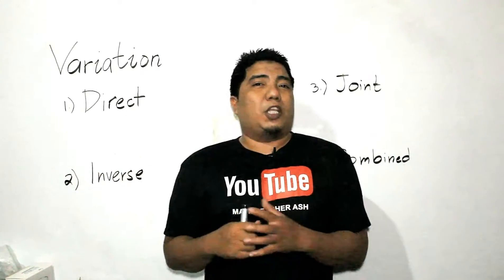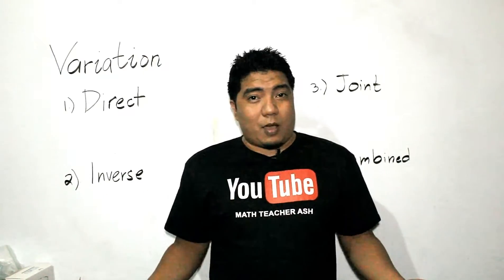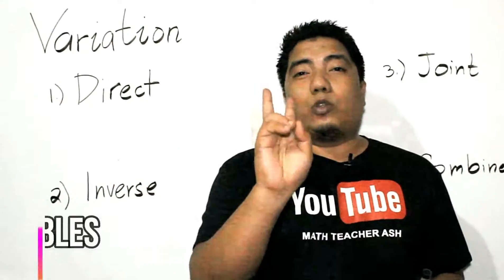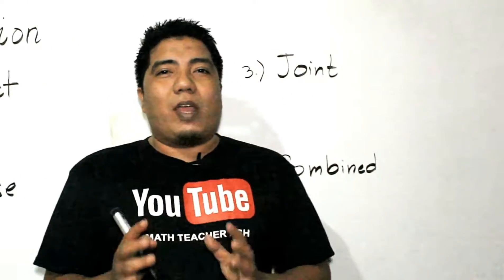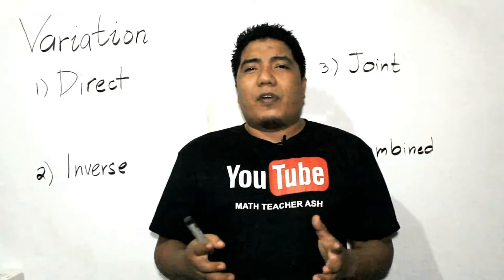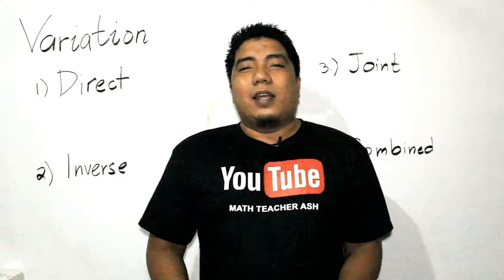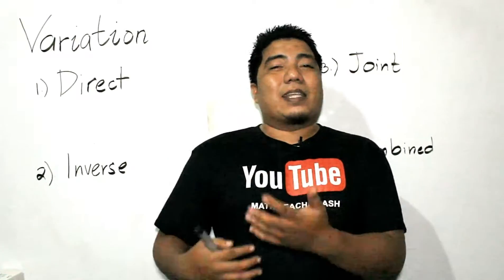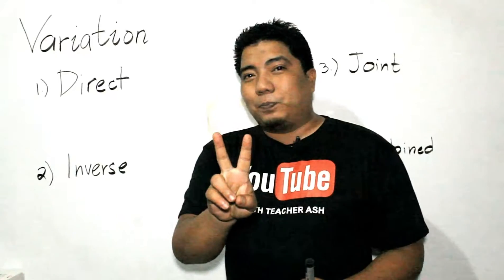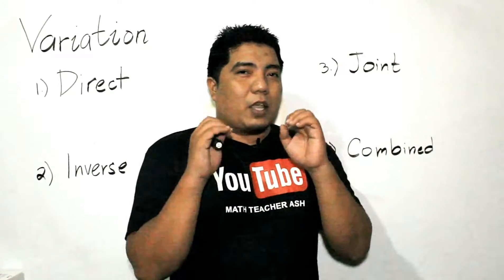How are these four variations related and how do they differ? The first two — direct and inverse — refer to only two variables, while the last two — joint and combined — refer to three or more variables. Variables are those letters that can change in value, such as x, y, z, or any letters that can represent any value.